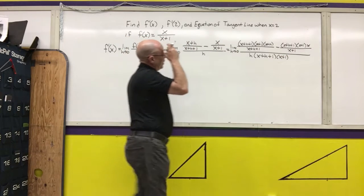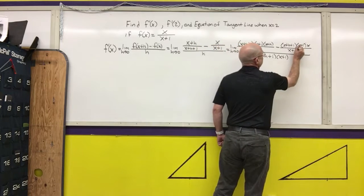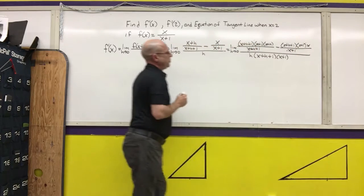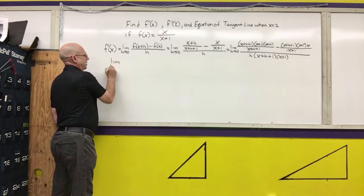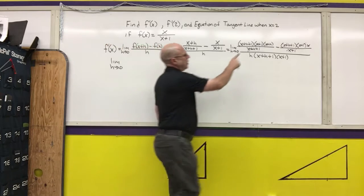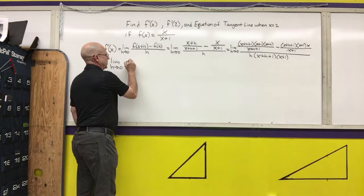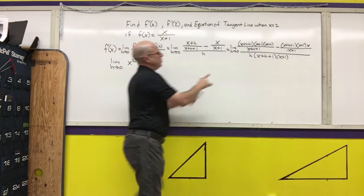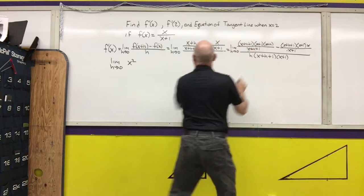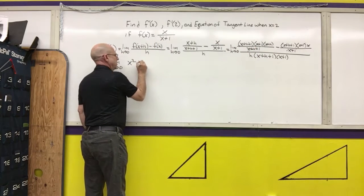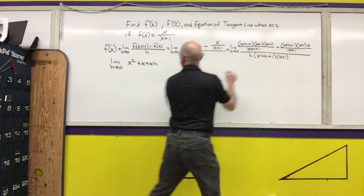Now we're going to simplify to notice that those two cancel. These two cancel, and I'm left with a regular fraction. So it's the limit as h approaches 0. I have x plus 1 times x plus h, which gives x squared, then x, then xh, and then h.